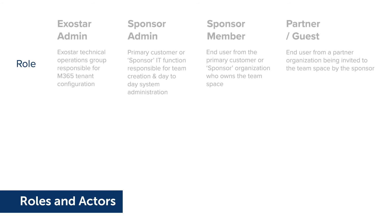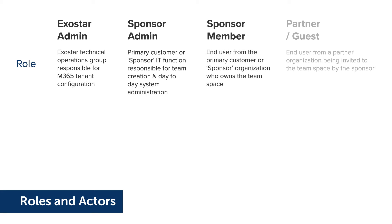The app currently has four roles. The ExoStar admin — this is ExoStar engineering responsible for backend server tenant setup and configuration. We have the sponsor admin — this is a primary customer IT function who is responsible for day-to-day administration and team creation. Then we have sponsor member — this is a business end user from the primary customer or sponsor organization who wishes to collaborate with others. Then we've got partners and guests — these are end users from other organizations that are being invited to collaborate with the sponsor.